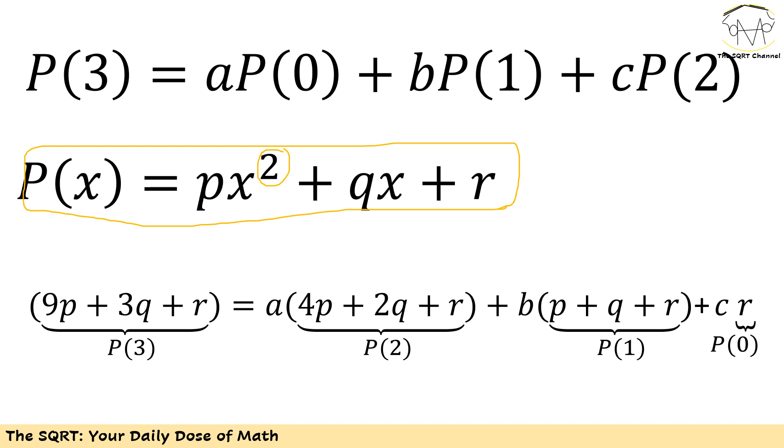Now I'm going to find the value for P(3), P(0), P(1), and P(2). On the left hand side, if I use 3 for x, I will end up with 9p + 3q + r. On the right hand side I need to use 0, 1, and 2 for x and multiply by the coefficients. At the end I will have A times (4p + 2q + r) plus B times (p + q + r) plus C times r.